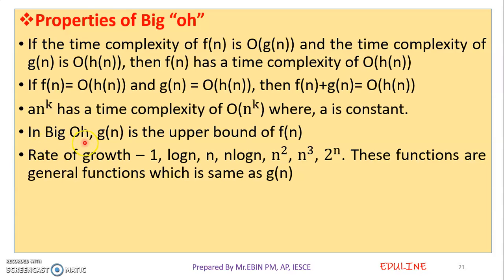In Big O, g of n is the upper bound of f of n. That means the upper bound represents the maximum amount of computation time — that means the worst case time complexity. So the worst case time complexity is represented by Big O notation.